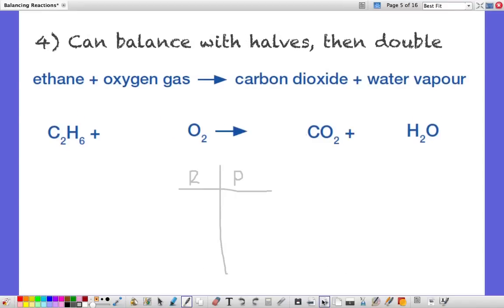And finally the last example is if you want to, there's actually nothing wrong with using fractions, decimals and halves in the process of balancing but you need to finish with whole numbers. So balance with halves then double. Here's the complete combustion of ethane producing carbon dioxide and water. And again we've got the same atoms involved, carbon, hydrogen and oxygen. Let's count them.